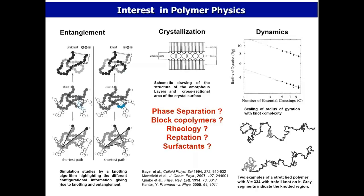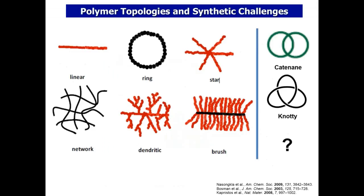In polymer science, we deal with large molecules. It can be in the form of a linear polymer — the most abundant topology — a macrocyclic ring, a star polymer, a network structure, dendritic structure, or even a brush. However, not too many examples show catenated structures, much less knotted structures, simply because synthetically they are very hard to access.